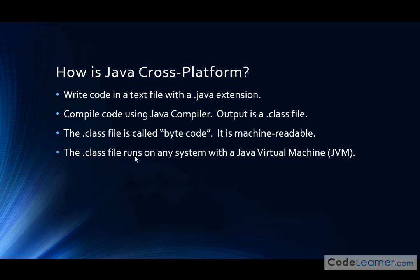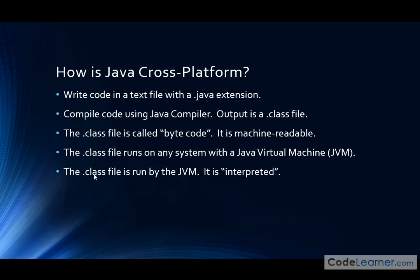Now the .class file can run on any system with what we call a Java virtual machine. Java virtual machine — it's a big fancy term, but basically it's a piece of software on your computer that lets you run Java programs. All modern operating systems are going to have a Java virtual machine available. So Windows has one, Mac OS has one, Unix has one, and even Android devices have one. You need to have this Java virtual machine in order to run your actual program. The .class file that's generated is what is actually run by the Java virtual machine.